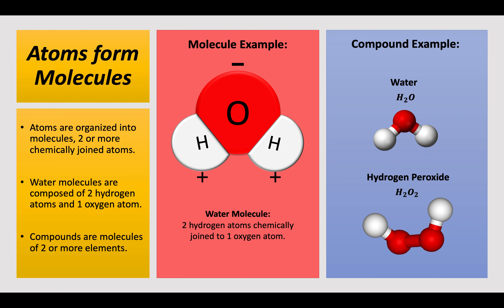Atoms form molecules, meaning two or more chemically joined atoms. For example, a water molecule is composed of two hydrogen atoms and one oxygen atom — H2O. Compounds are molecules of two or more elements, which is a different term. A water molecule has two hydrogen atoms — the white positive atoms on the outside — chemically joined to one oxygen atom.